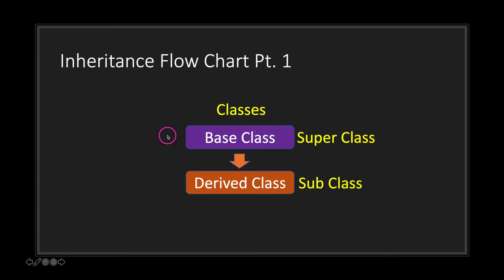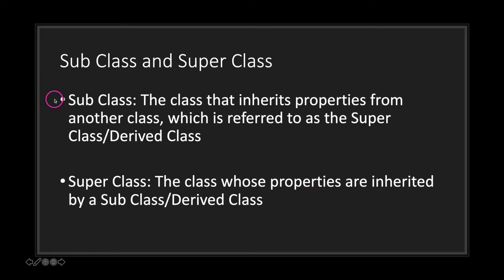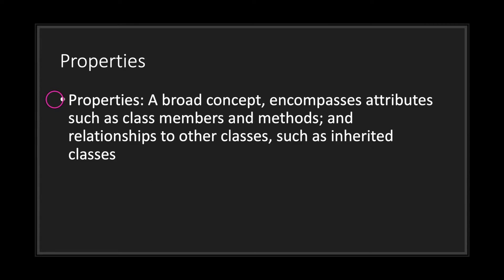When you do inheritance you deal with two things: a base class and a derived class. A base class can also be referred to as a super class, and a derived class can also be referred to as a subclass. A subclass is the class that inherits properties from another class — the super class. The word property is a broad concept that encompasses attributes such as class members, methods, and relationships to other classes such as inherited classes.